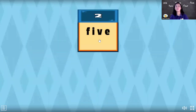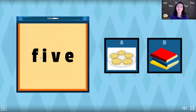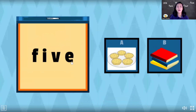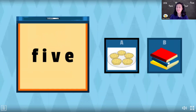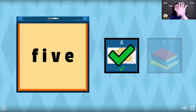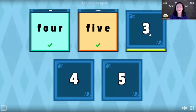Let's go to number two. Let's spell the number: F-I-V-E. F-I-V-E. Five. Yes, it's number five. Now check — is it five cookies or three books? Is it cookies or books? Yes, it's five cookies!